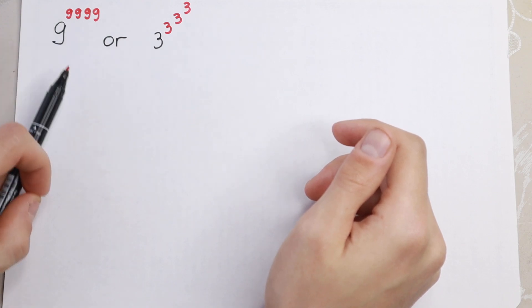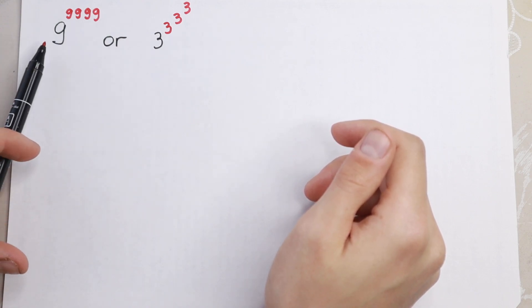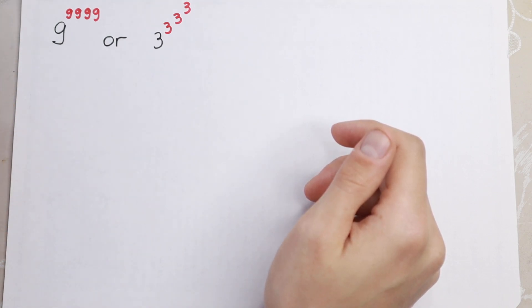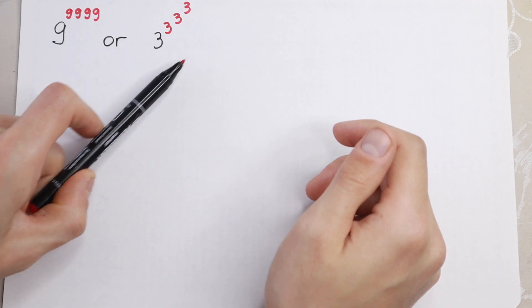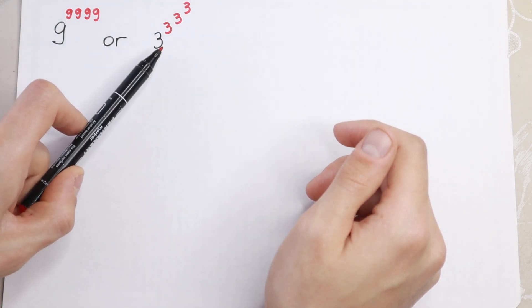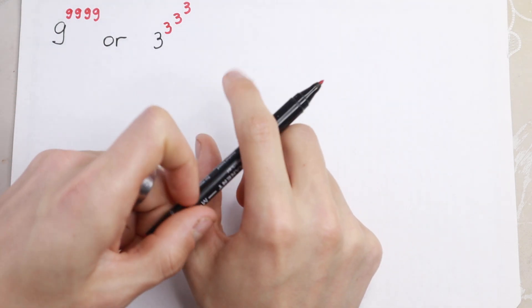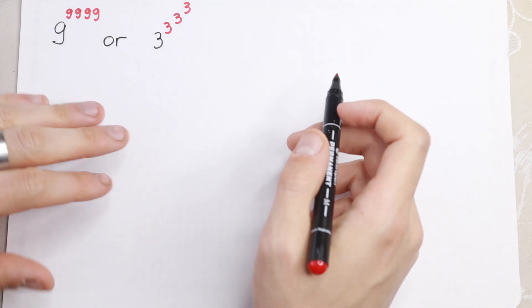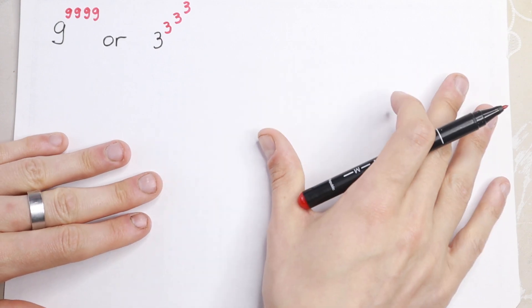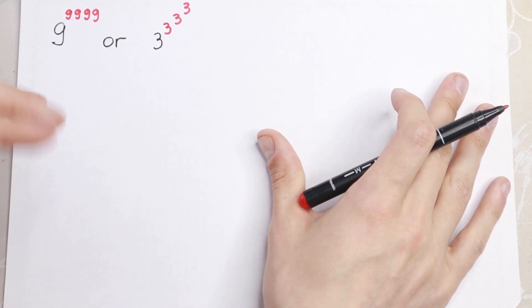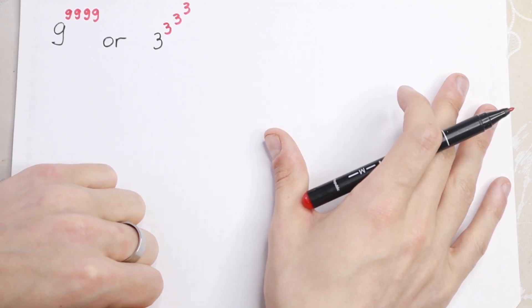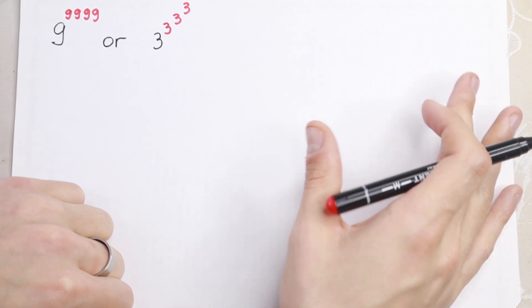So this one on the left hand side: 9 to the power 9^(9^9), or this one on the right hand side: 3 to the power 3^(3^3). We need to compare these two numbers. How can we do this? Take a look.